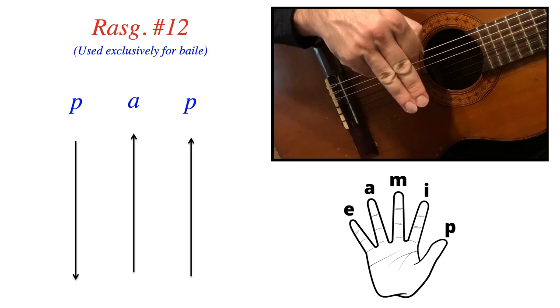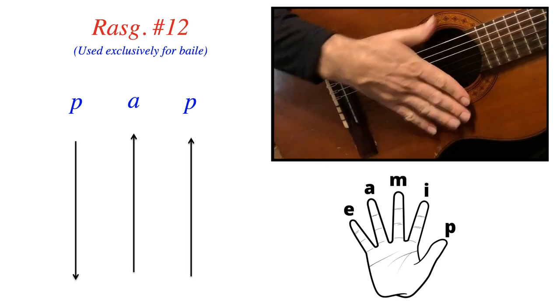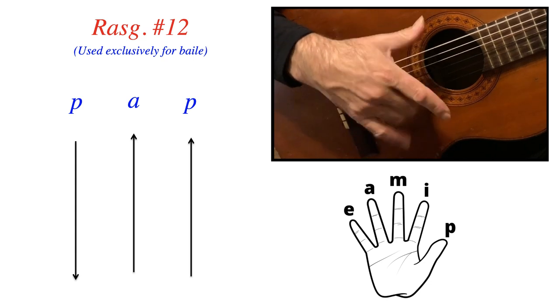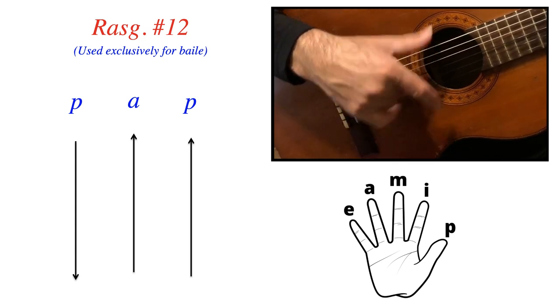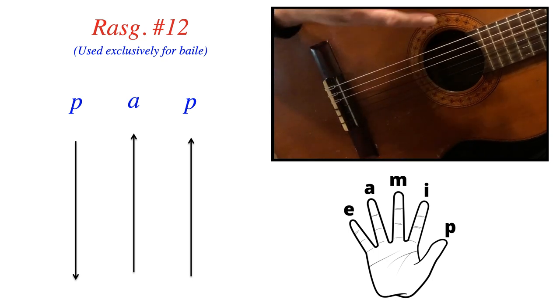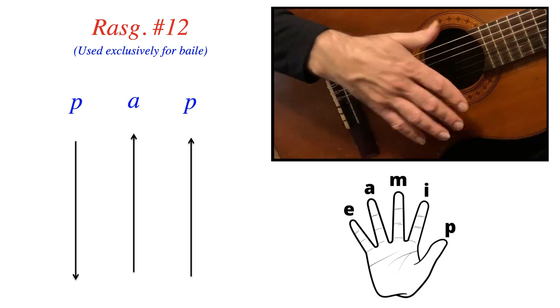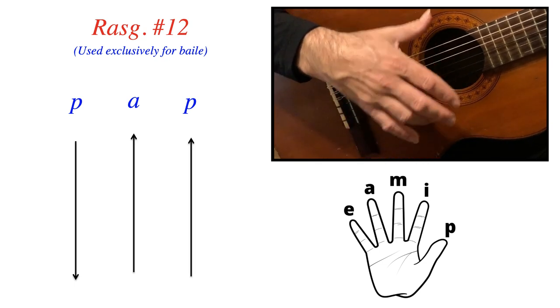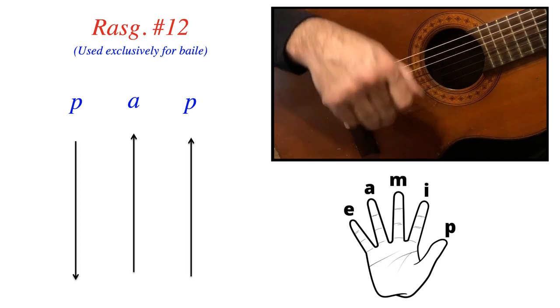And you could also incorporate the M finger, fusing it with A if you'd like for some more power on the downstroke. Maybe you'd like to even start this whole pattern with your downward A instead of starting with P, and that's fine. Or fusing together, like I just showed you, M and A.